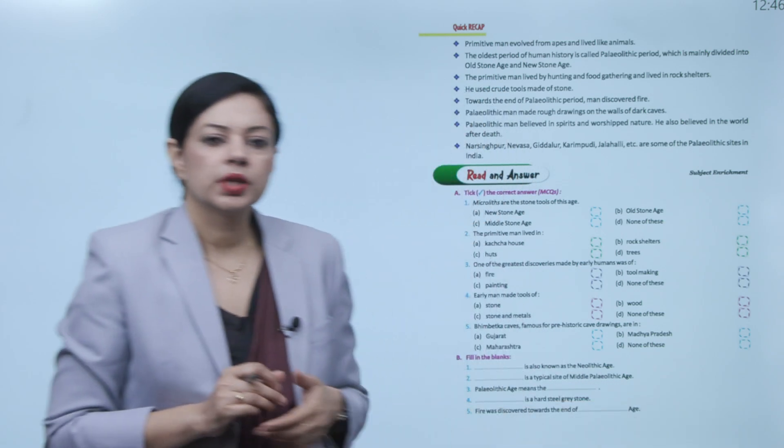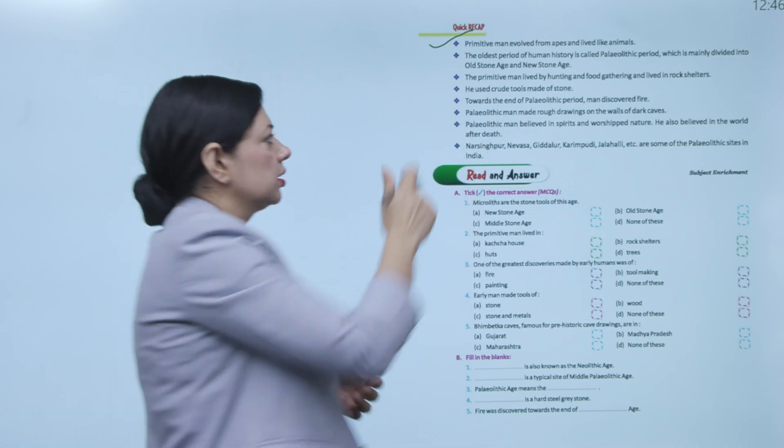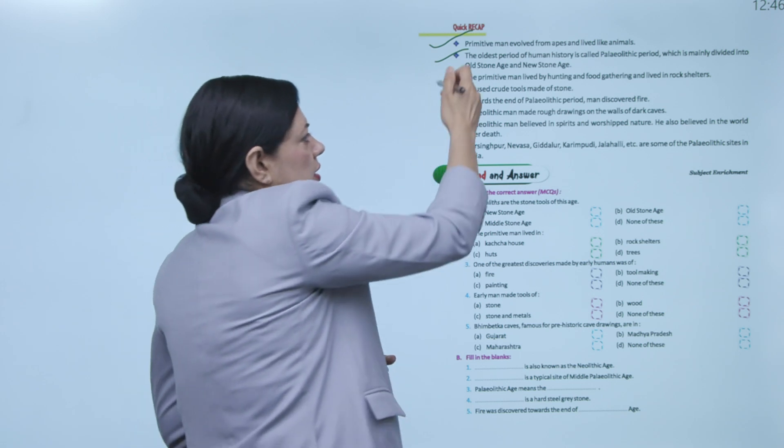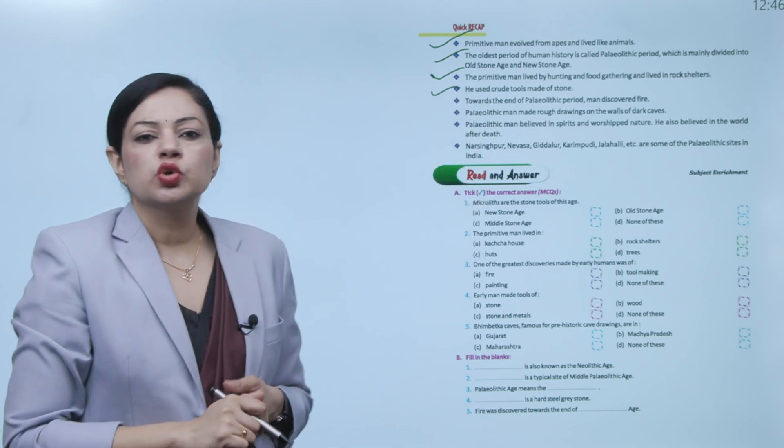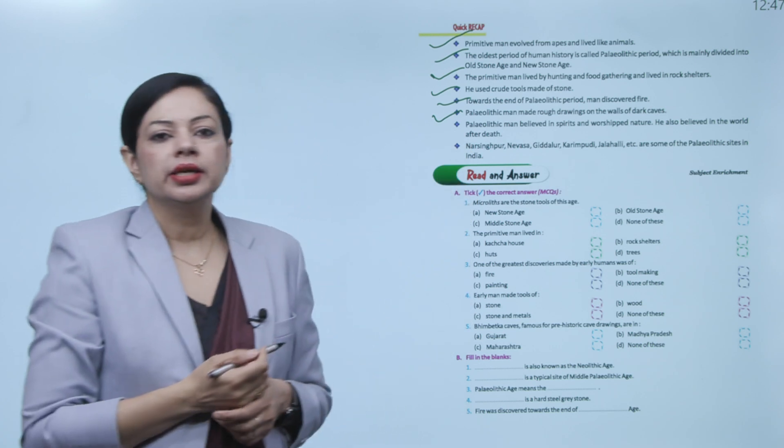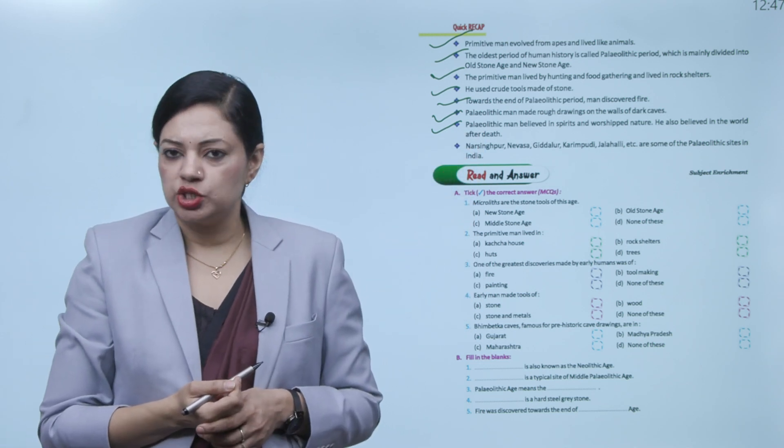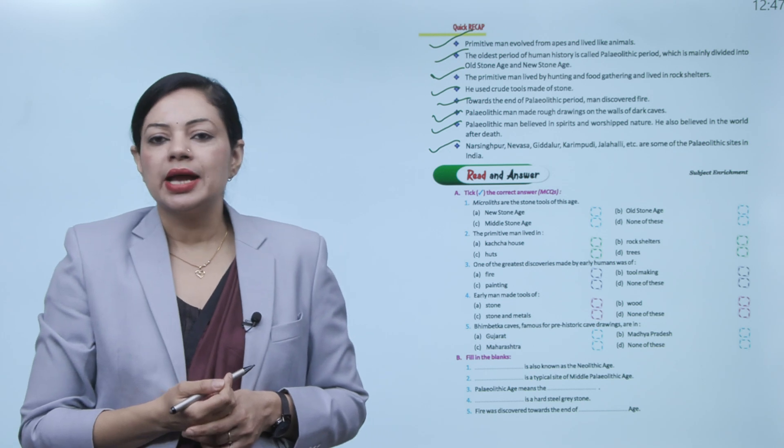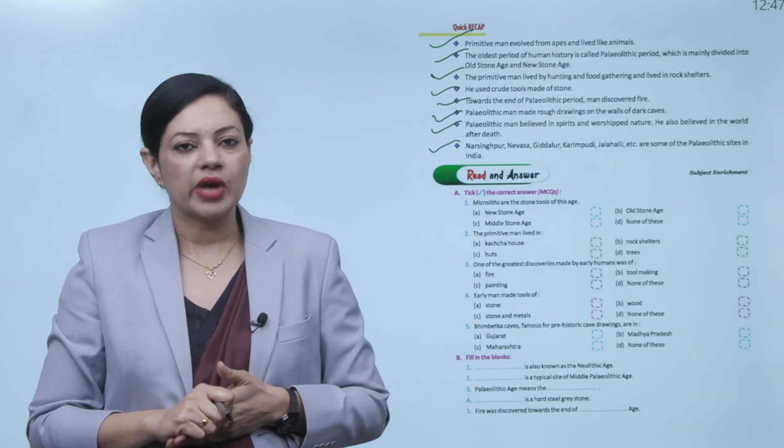Now we have to do a quick recap of the chapter. First, primitive man evolved from apes and lived like animals. The oldest period of human history is called Paleolithic period which is mainly divided into Old Stone Age and New Stone Age. The primitive man lived by hunting and food gathering and lived in rock shelters and he used crude tools made of stone. Towards the end of Paleolithic period man discovered fire and Paleolithic man made rough drawings on the walls of dark caves. Paleolithic man believed in spirits and worshipped nature. He also believed in the world after death. Narsinghpur, Nevasa, Giddalur, Kurnool, Challaji etc. are some of the Paleolithic sites in India. So this is the chapter. I hope you have understood the chapter. You have to read it once again and practice the exercises yourself.